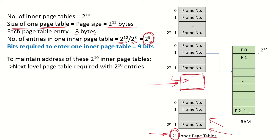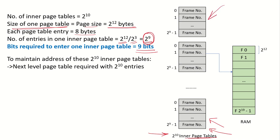Since there are 2^9 entries in each inner page table, we need 9 bits to index into any of them. Once we know which inner page table we are referring to, we use 9 bits as the offset to find the particular page entry and retrieve the frame number, which we then use to access physical memory.